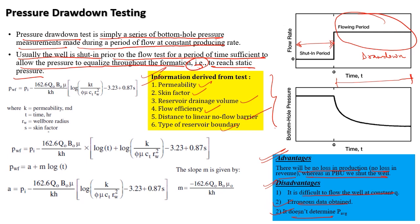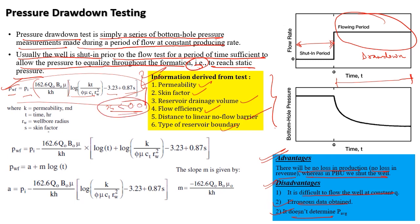The formula is: P_wf = P_i − 162.6·Q·μ·B / (K·h) · [log(K·t / (φ·μ·C_t·r_w²)) − 3.23 + 0.87·S]. We derived this equation in the previous session from the diffusivity equation using the EI solution log approximation, valid when the argument is less than 0.01. Here K is permeability, t is time, r_w is wellbore radius, and S is skin factor.